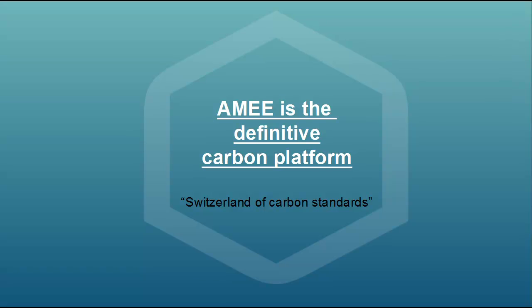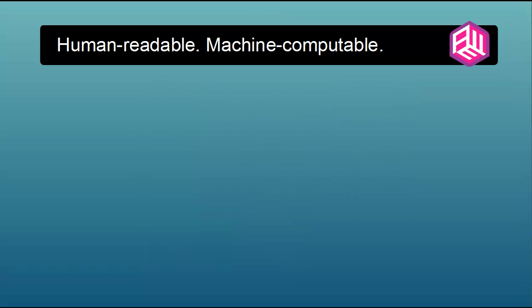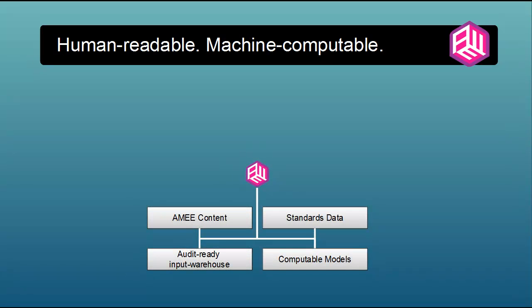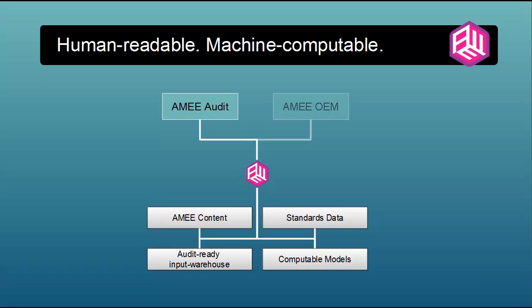Having created the world's most advanced platform for carbon standards management, AIME then makes the models accessible and usable in two significant ways. The first is human-readable, the second is machine-computable. The human-readable version of AIME is AIME Audit. The machine-computable version is AIME OEM.